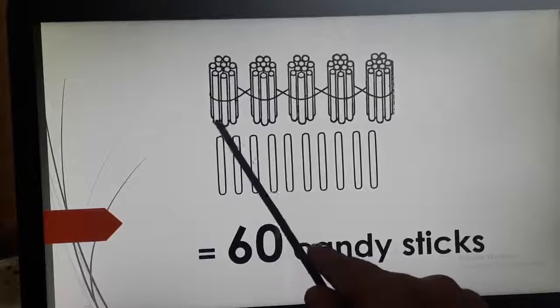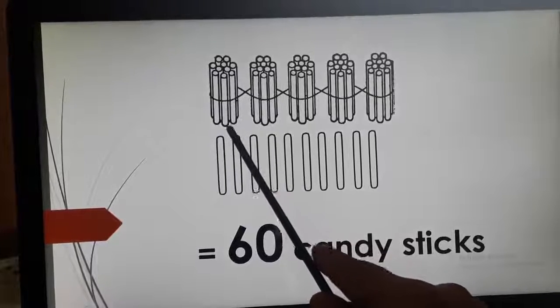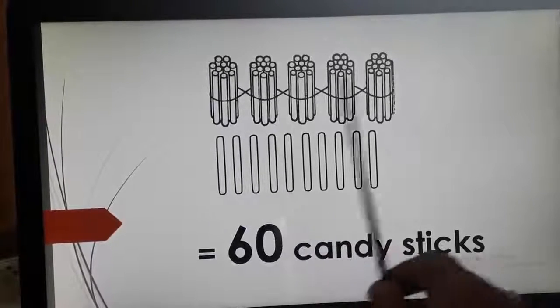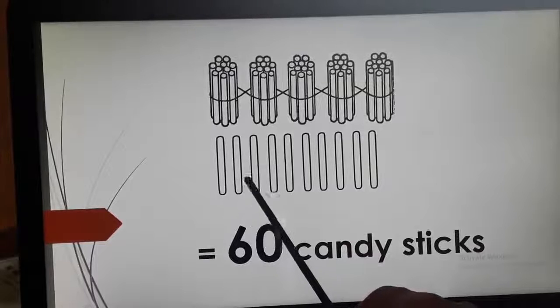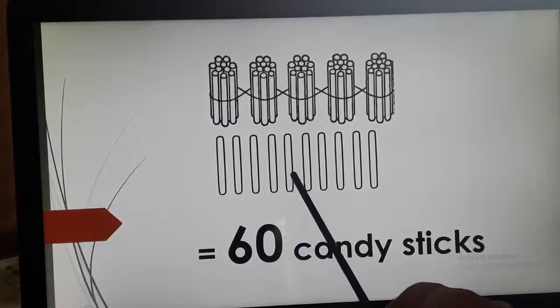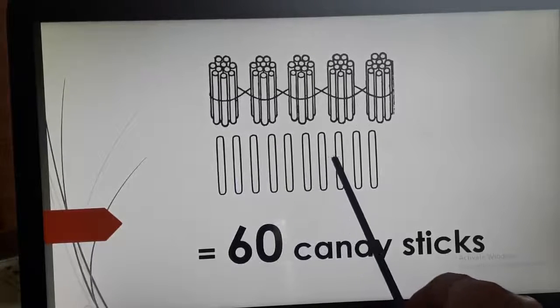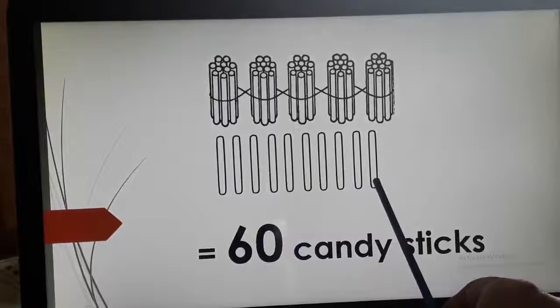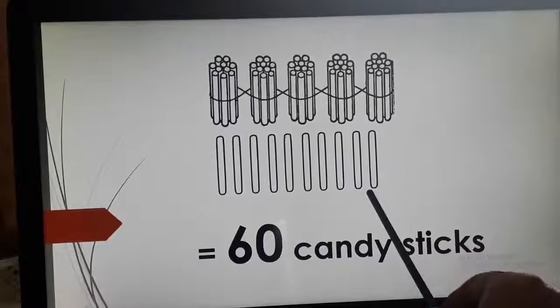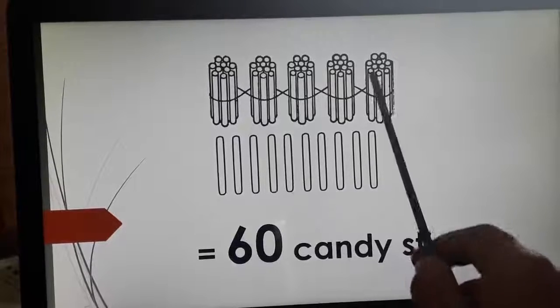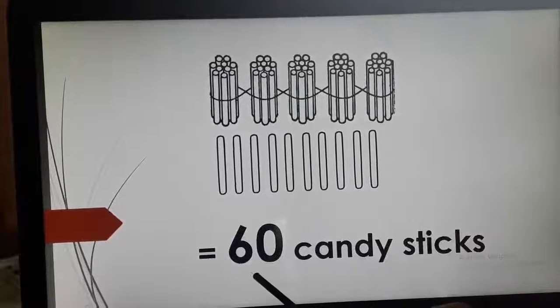Now, here let's see how many more candies are there. Here 50 are there and 1, 2, 3, 4, 5, 6, 7, 8, 9 and 10. So, 50 and 10, 60. 50 and 10, 60.